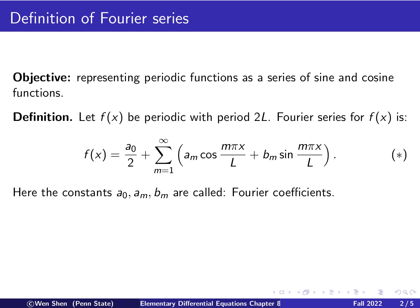These coefficients, they are constants, not necessarily positive. We have a0 and am and bm for all m's. They are called Fourier coefficients.